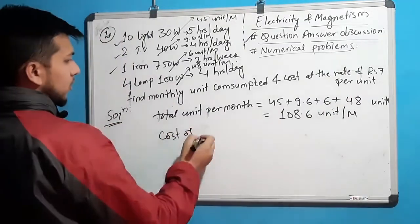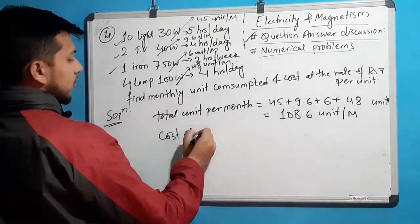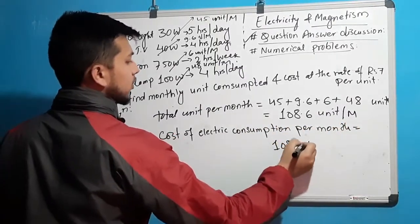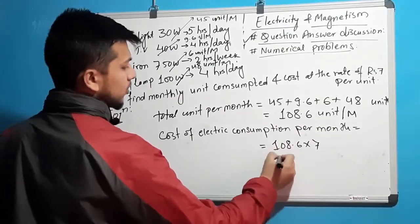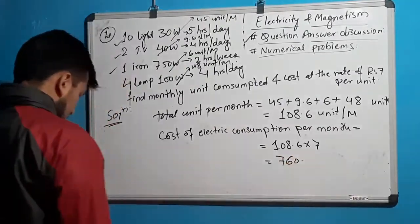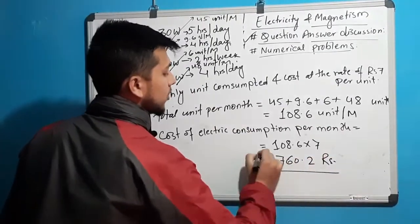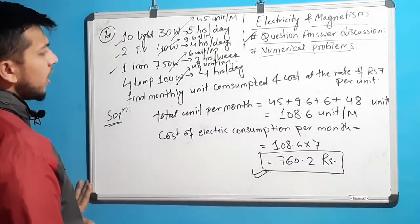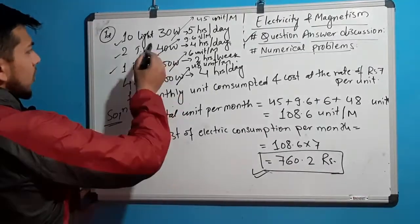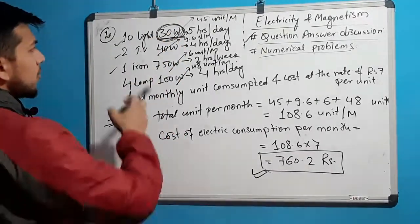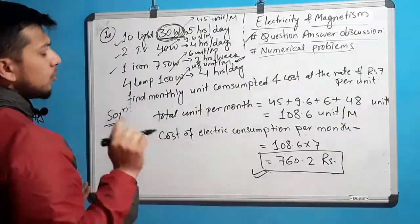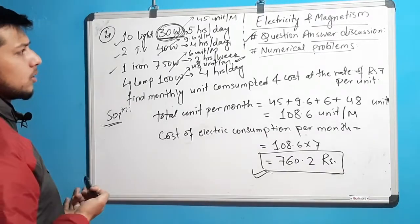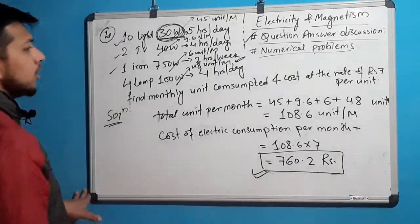The cost of electric consumption for the month equals 108.6 into 7 equals 760.2 rupees. This is easy — first convert watts into kilowatts by dividing by 1000, multiply by hours, and for weekly appliances multiply by 4 (weeks per month), and for daily appliances multiply by 30. In this way you can calculate the monthly cost of electric consumption.